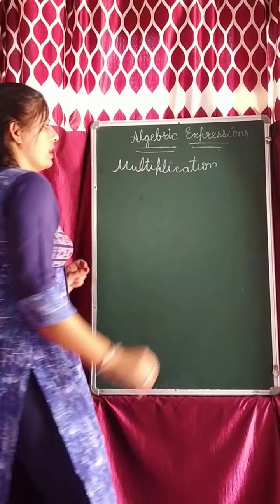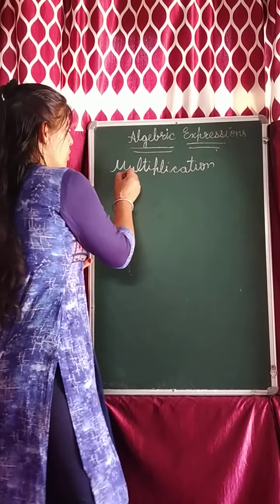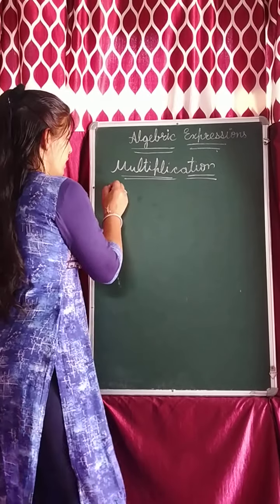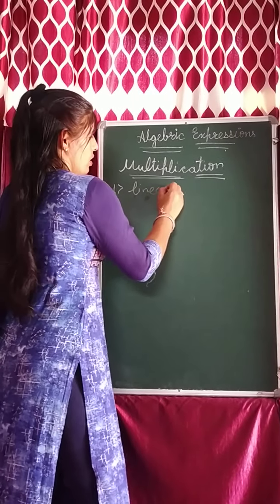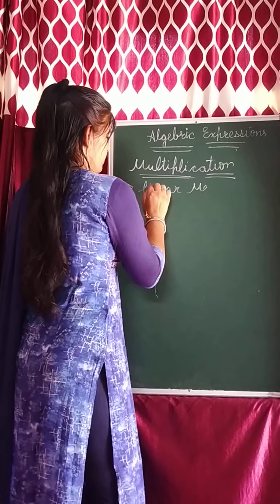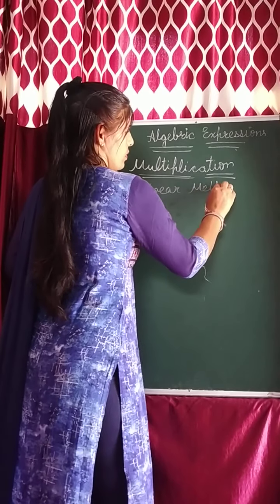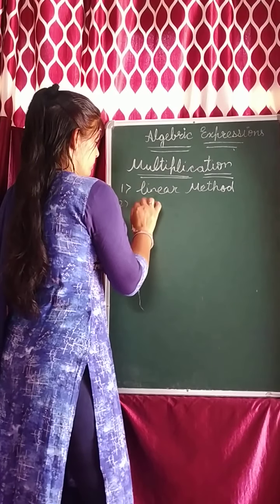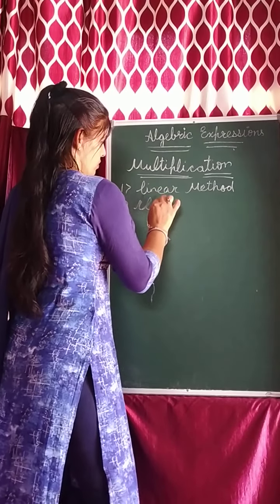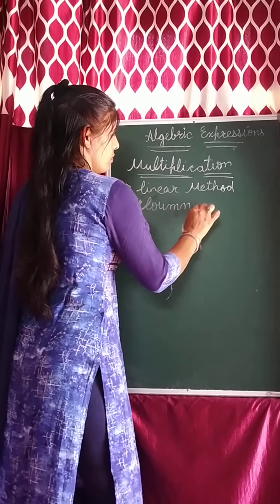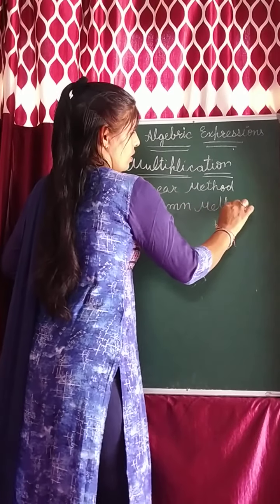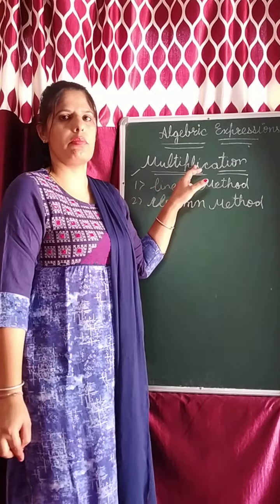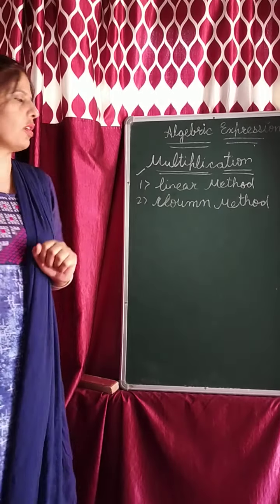That is, how to multiply. So we will use two methods for this. First is the linear method, and second is the column method. Firstly we will discuss the linear method and solve how to multiply using the linear method.